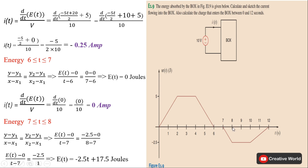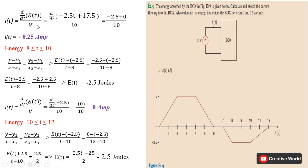For energy between 7 and 8: initial coordinates are y₁ = 0, x₁ = 7 and final coordinates are x₂ = 8, y₂ = minus 2.5. Putting these coordinate values and solving gives the energy equation for this interval. Taking its derivative and dividing by voltage, we get minus 0.25 ampere.